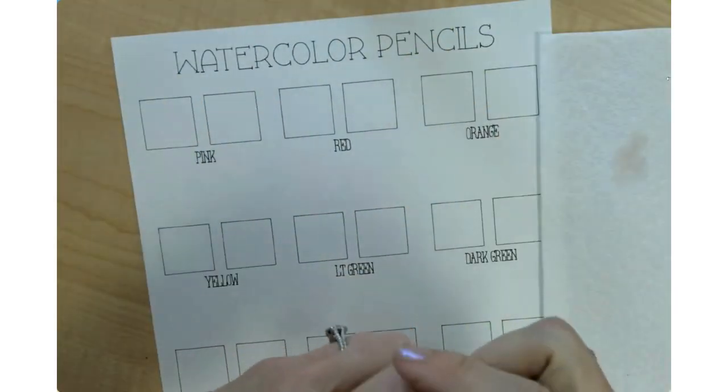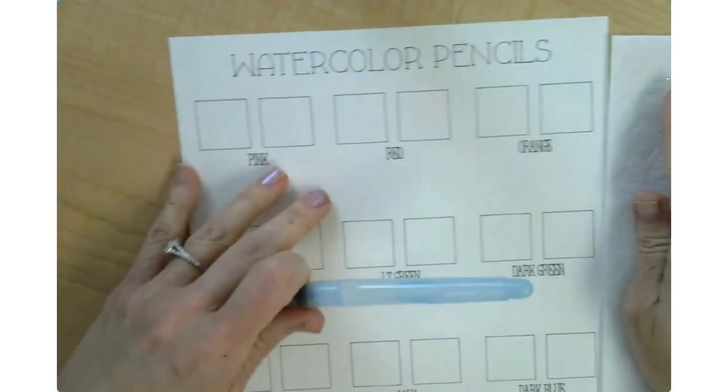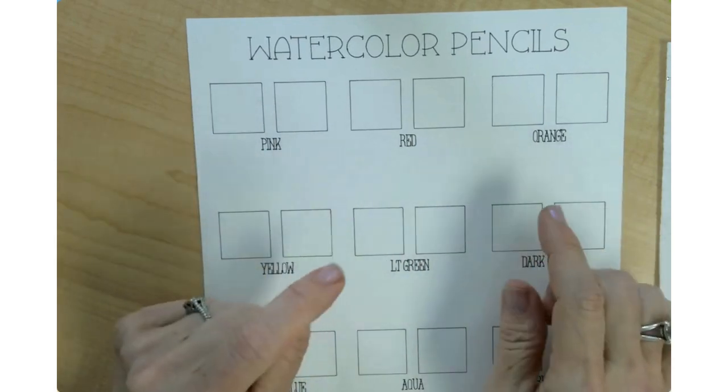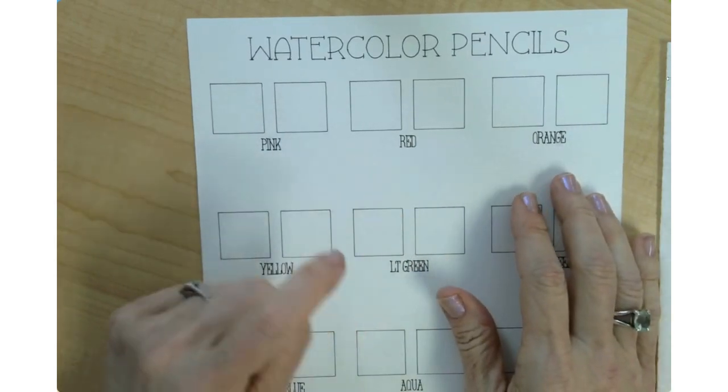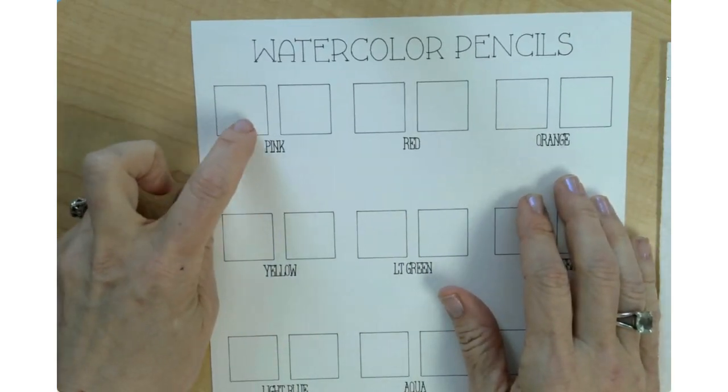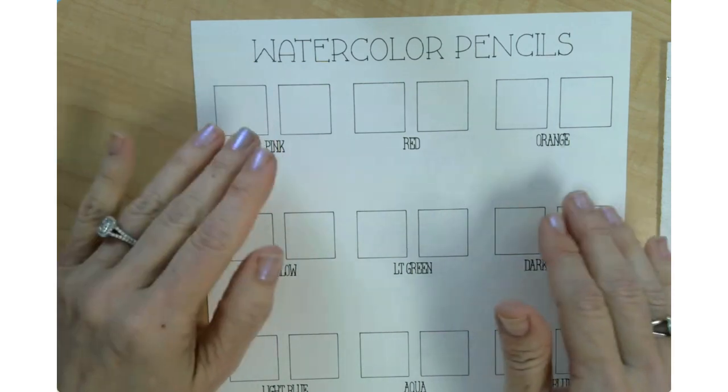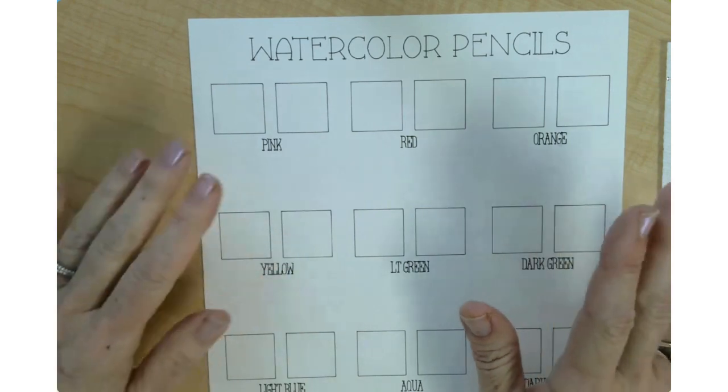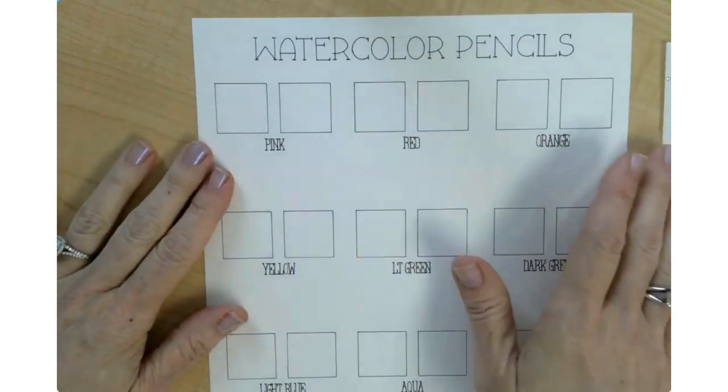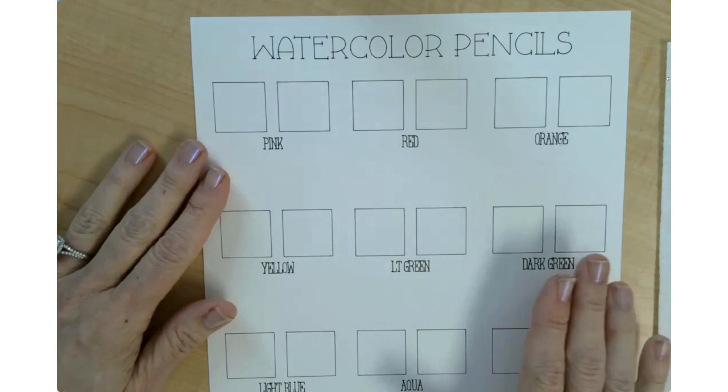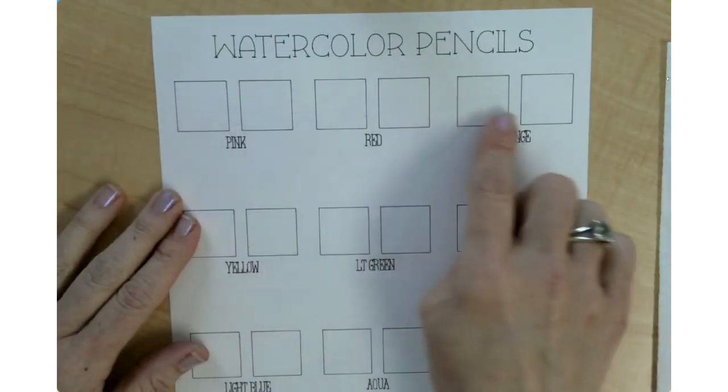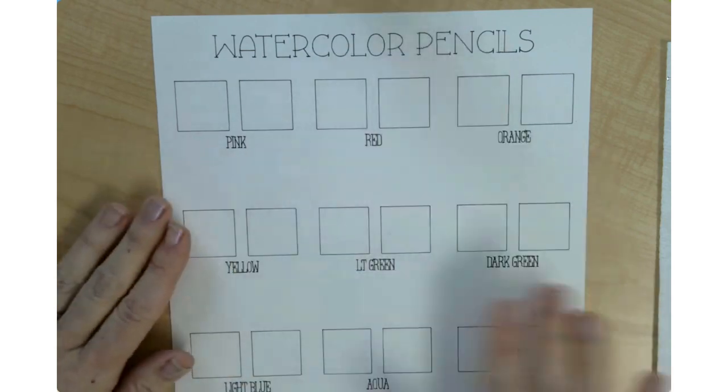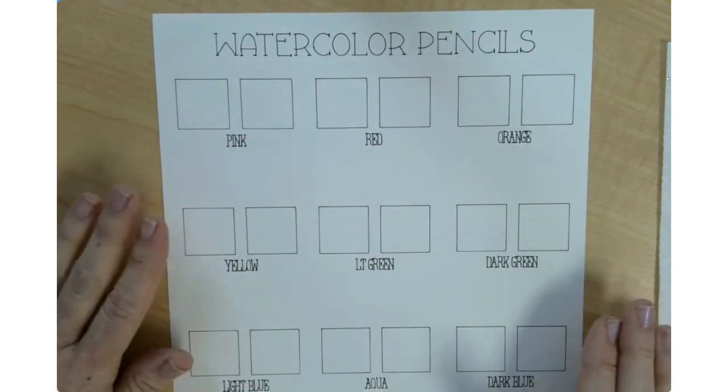Doing the swatches of my cardstock actually gave me the idea to make a swatch paper for my watercolor pencils, because I wanted to know what does the pencil look like in its natural state, and then what does it look like when we do the watercolor. So this is watercolor paper, and I just made these boxes and the text box with the words.